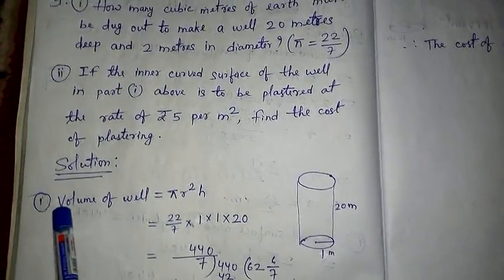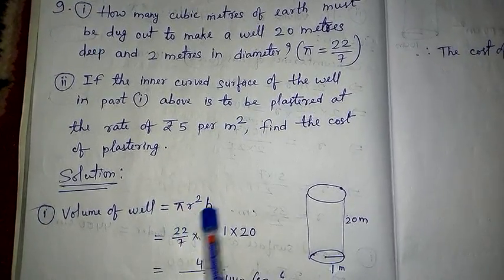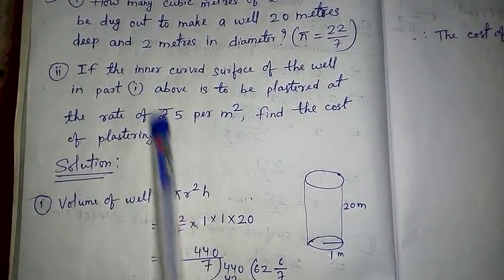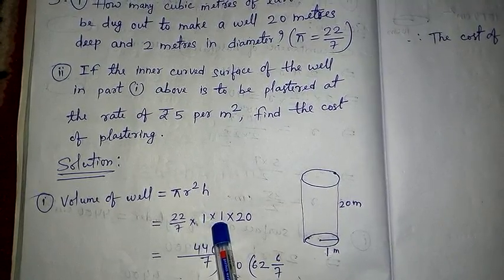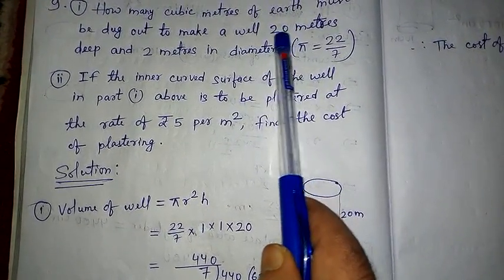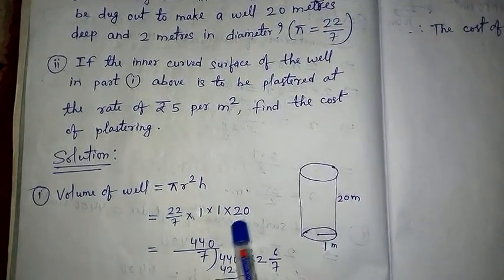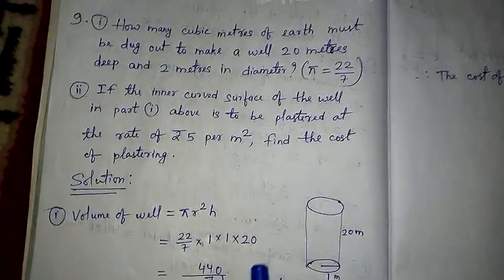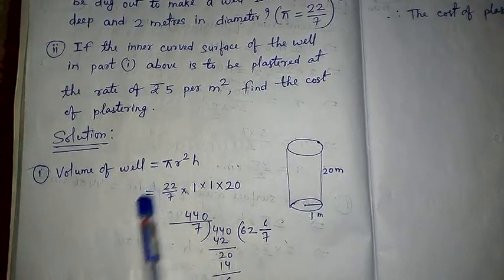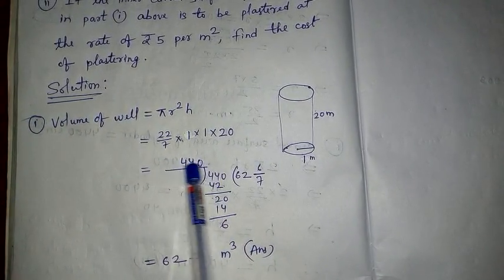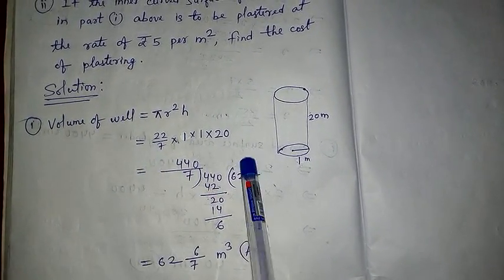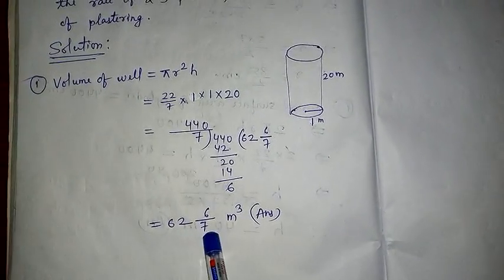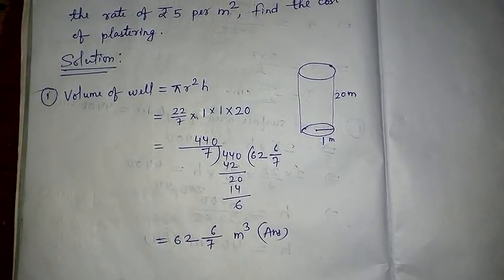Volume of the well = πr²h = (22/7) × 1 × 1 × 20. We could not cancel, and ultimately the answer is 62 and 6/7 meter cube. This is our first answer.